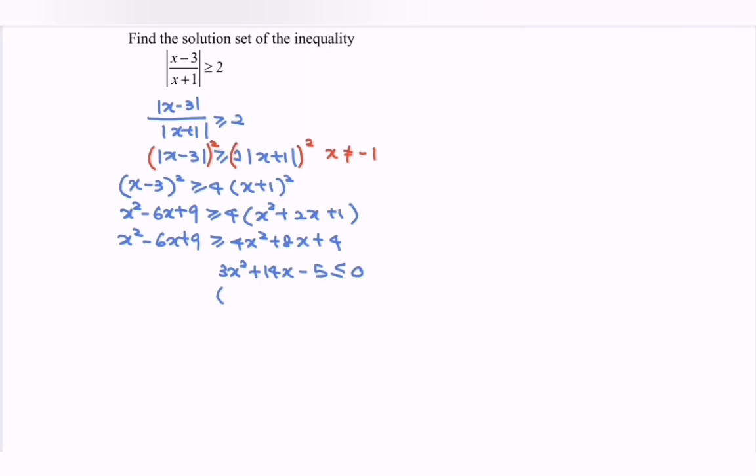So can we factorize the situation? So here we have 3x minus 1 times x plus 5 less than equals to 0. Do you remember? We have the restriction. So since we have the simplest form, determine the sign.